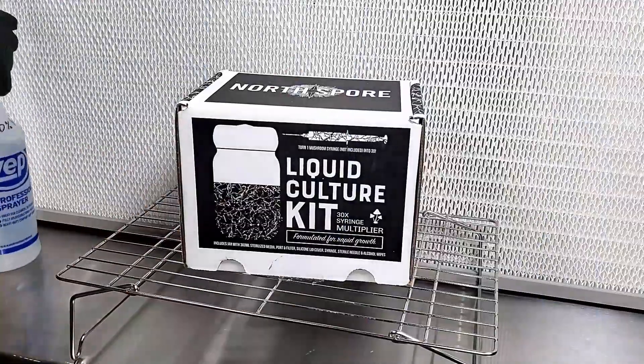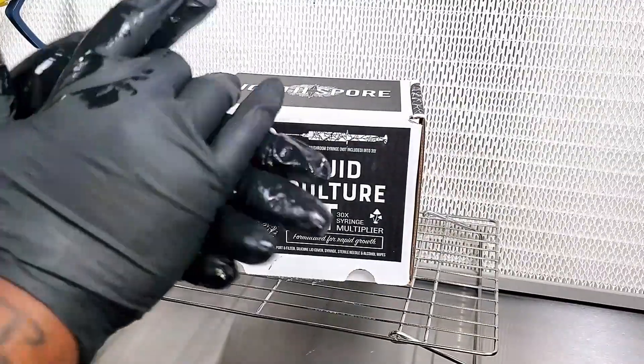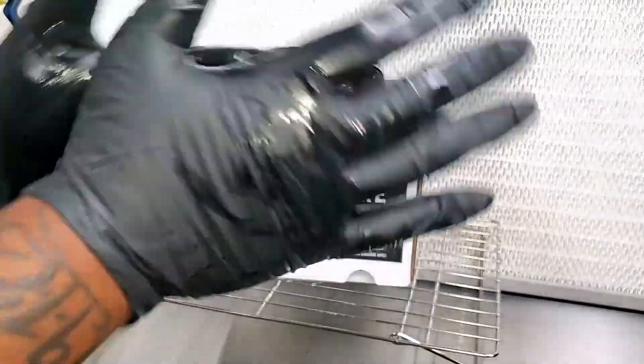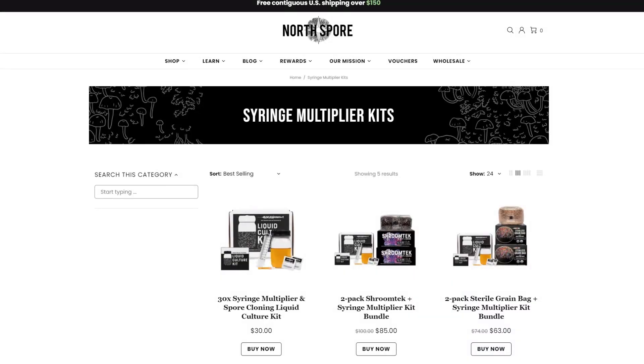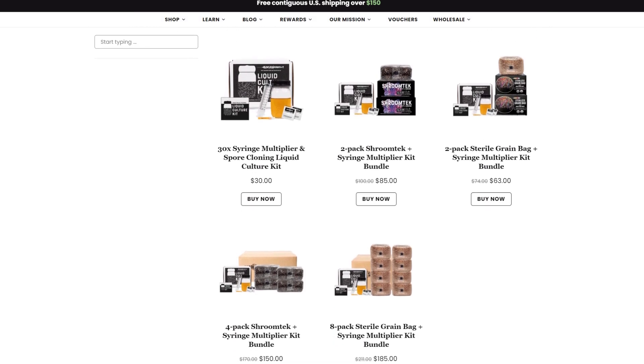Yo, what's good rookies, I am BassDrop Keys, your friendly neighborhood negro, and I want to welcome you guys back to The Rookie Mycologist. In today's video, we're going to be doing something that I've never done before. We're going to start the process of turning one liquid culture syringe into 30.